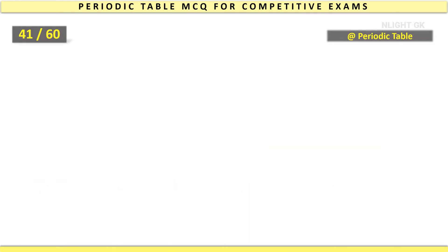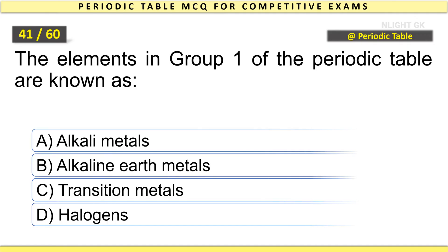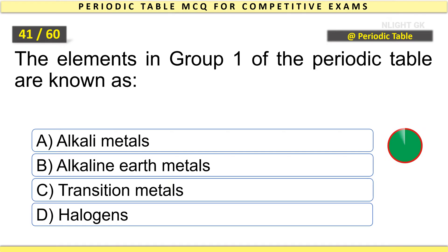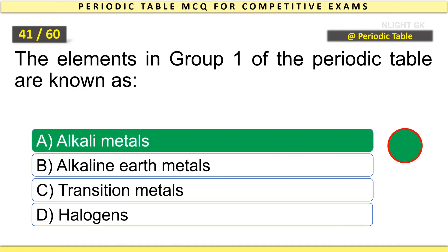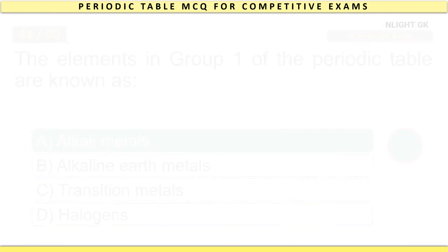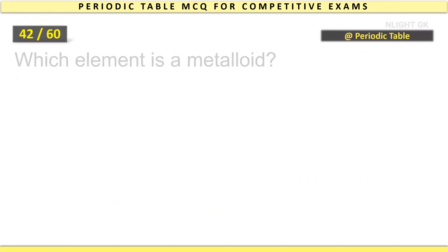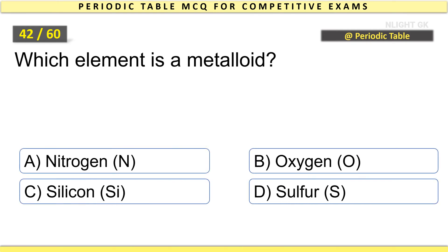The elements in group 1 of the periodic table are known as Alkali metals. Which element is a metalloid?